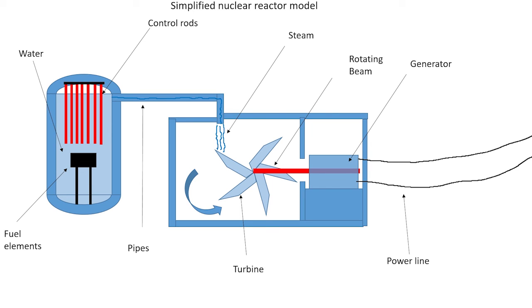How does this generate electricity? Well, the heat from the fission is used to turn water to steam. The steam is then used to turn a turbine which powers the generator, which finally generates electricity.